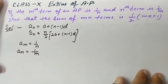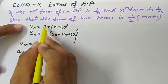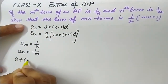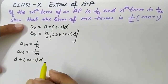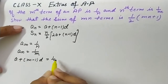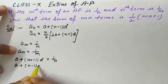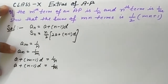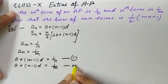Let's start and find 'a' and 'd'. For aₘ, applying the formula: aₘ = a + (m - 1)d = 1/n — this is equation 1. And for aₙ: a + (n - 1)d = 1/m — this is equation 2.